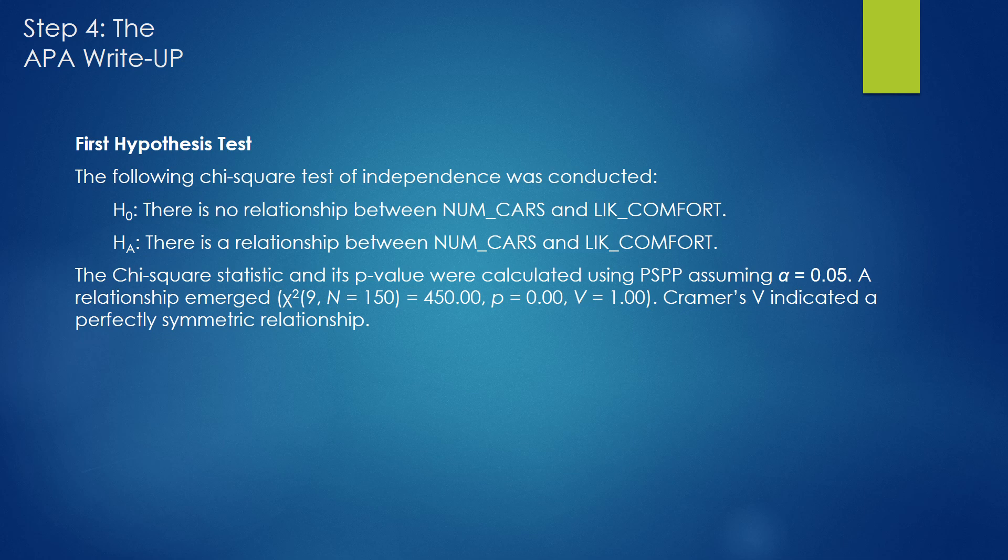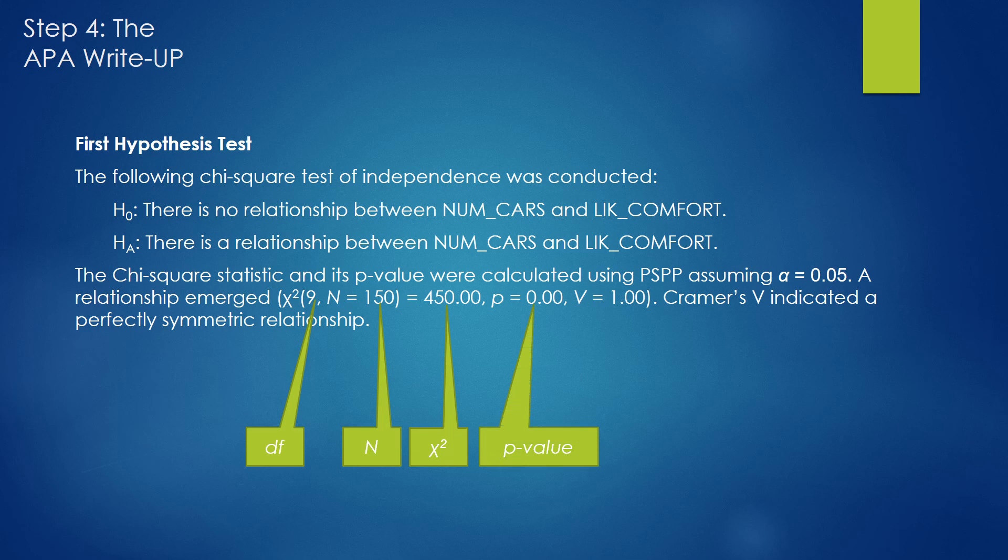We state that we performed the chi-squared test and the chi-squared test had nine degrees of freedom. It contained 150 cases and the chi-squared value itself, the statistic of chi-squared, was 450. The p-value of the test was zero and had a Cramer's V of one. We also state that Cramer's V indicated a perfectly symmetric relationship. The important thing to notice is how these statistics are formatted in a parenthetical citation. Basically, you see chi-squared, p, and v in that order. It's always presented in this order in APA.